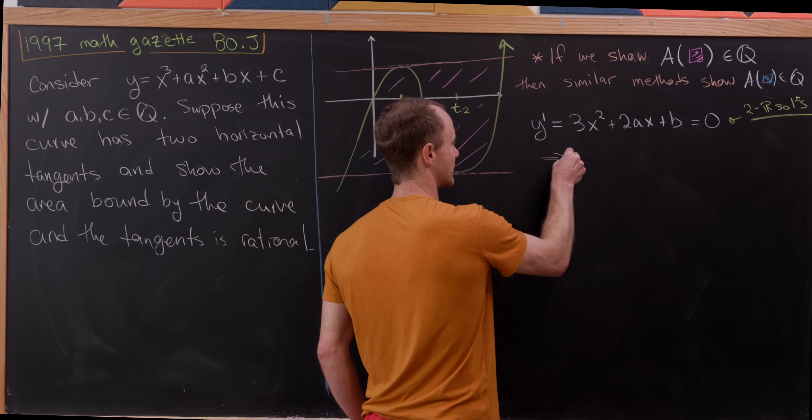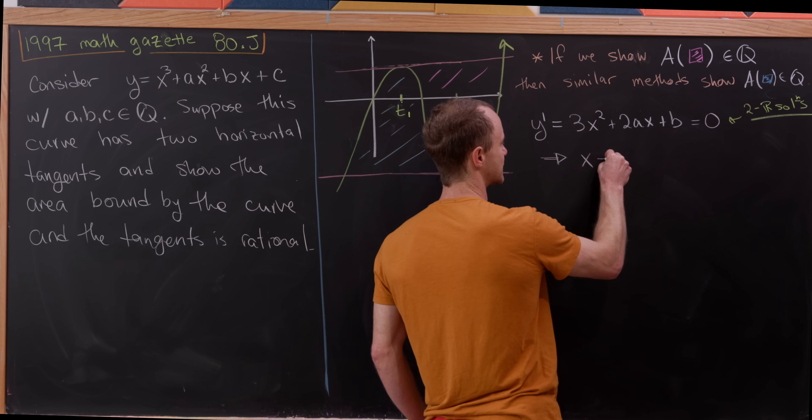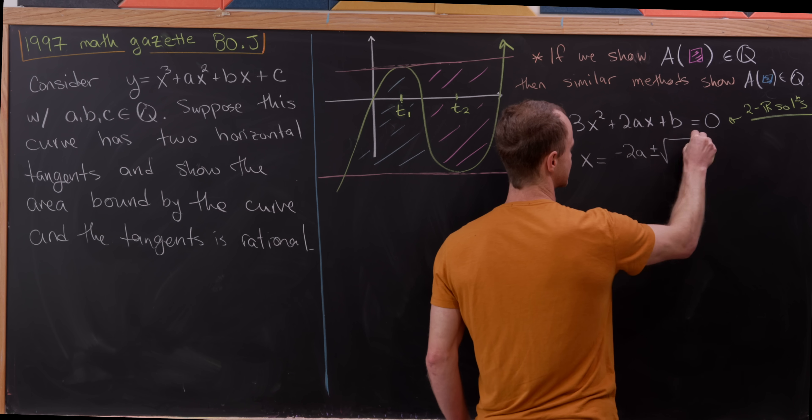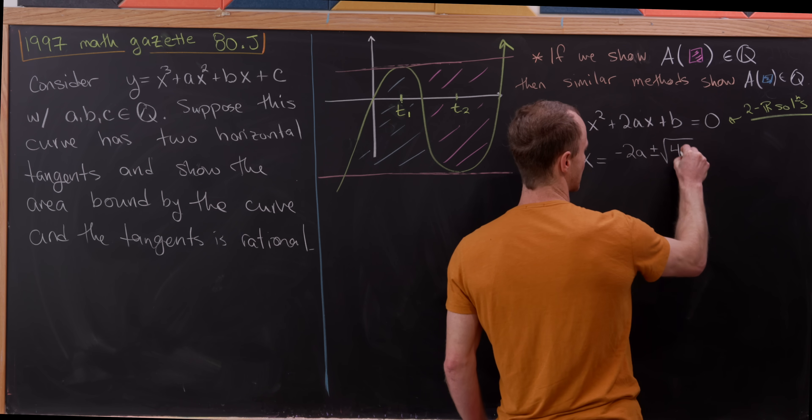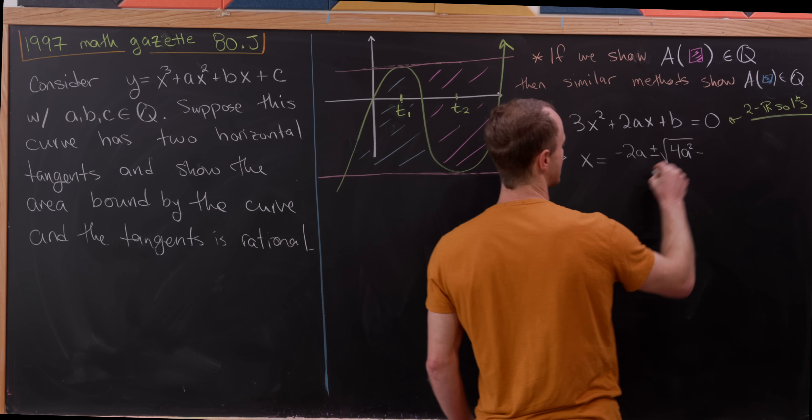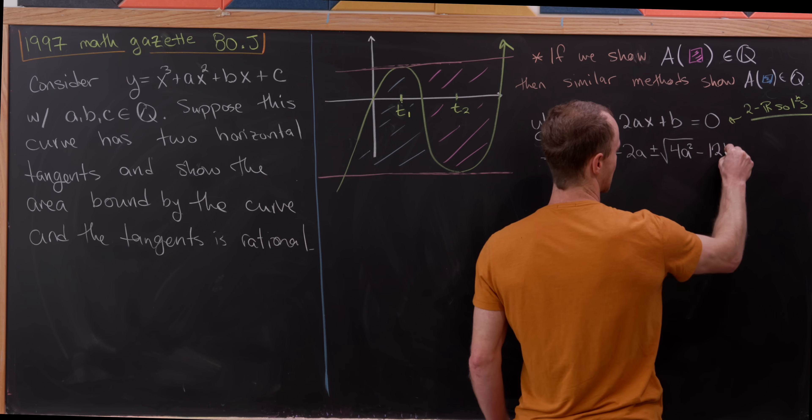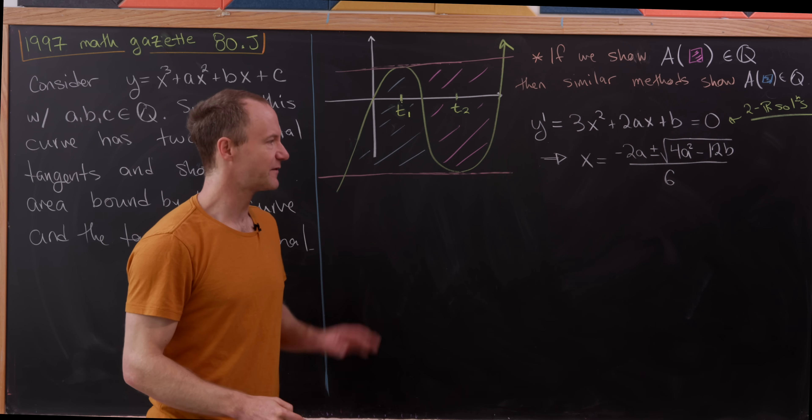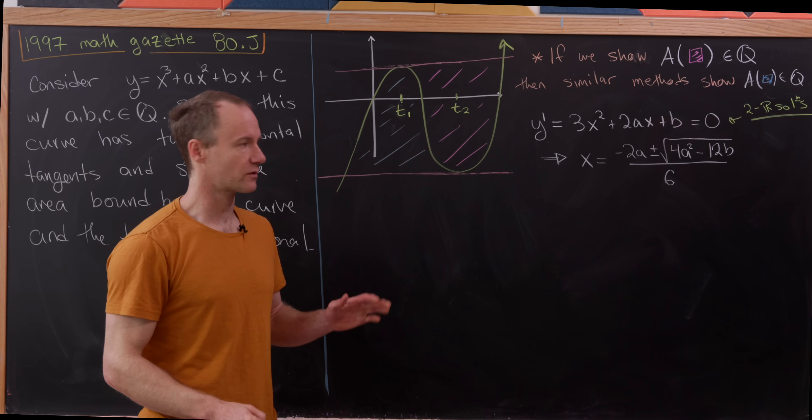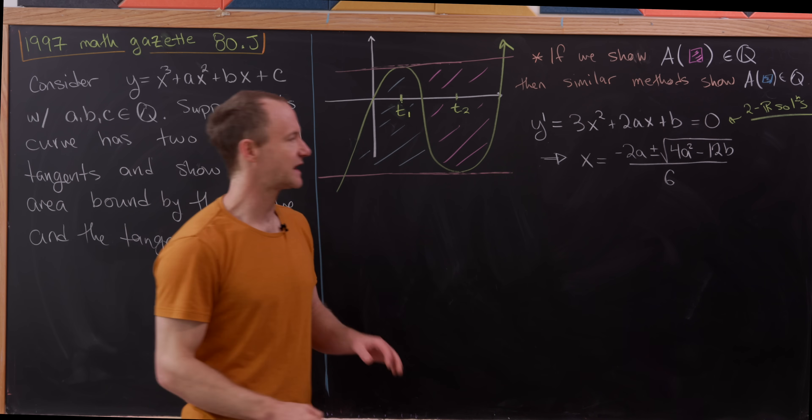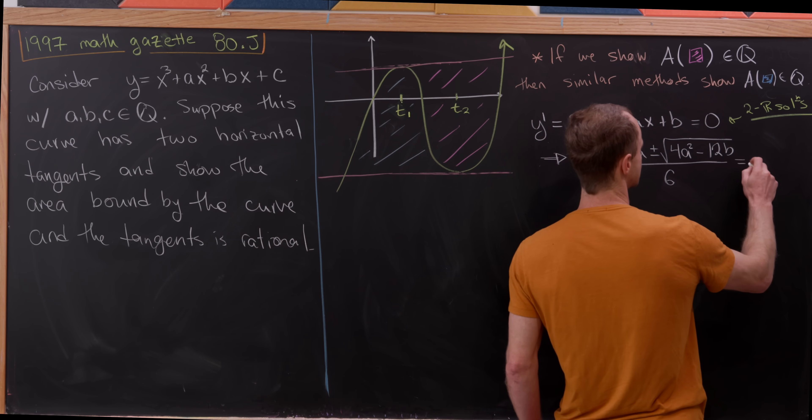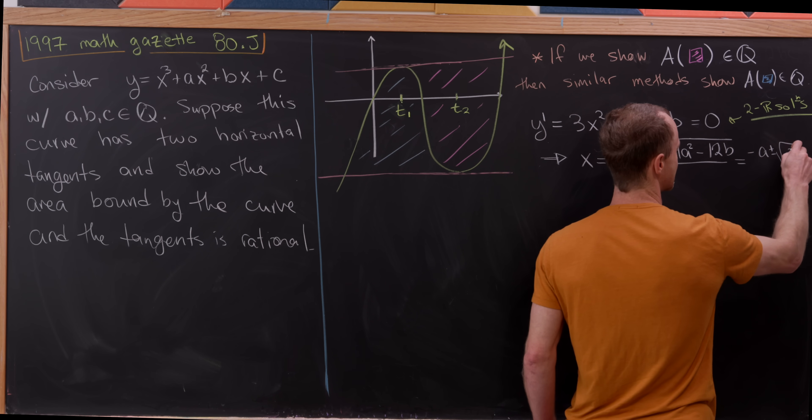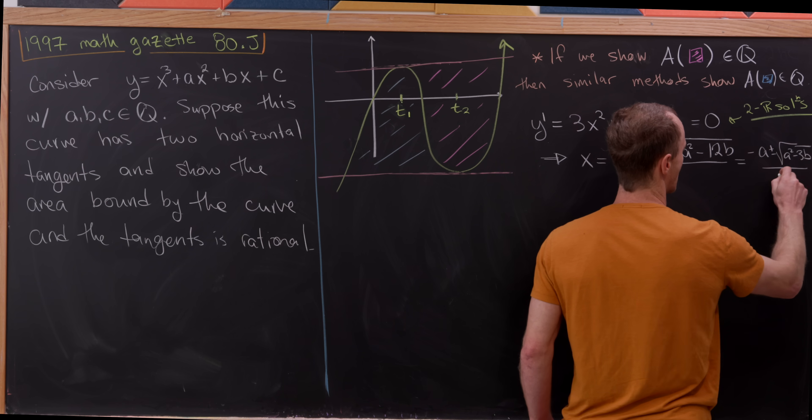But then by the quadratic formula, we know what those solutions are. So here we have x equals minus 2 times a plus minus the square root of 4a squared minus 12 times b all over 6. But we can simplify that a little bit by factoring a square root of 4, or in other words, a 2 out of that square root, and then canceling the denominator down a little bit. So that's going to give us minus a plus minus the square root of a squared minus 3b over 3.